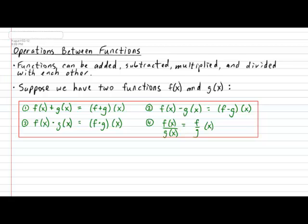Let's take a look at some of these operations through a few examples. Let's start with a very easy one. What if I were to tell you that f of x is equal to 6x minus 7 and g of x was 2x plus 5.